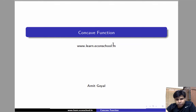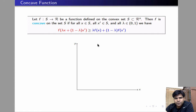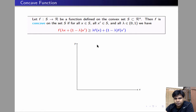Hi, welcome. In this video, we'll talk about concave and convex functions. Suppose f is a function from S to the real line, where S is a convex subset of Rn. So the domain of f is S and the co-domain is the real line.